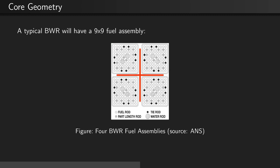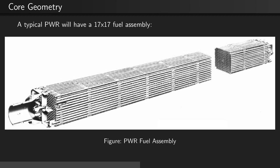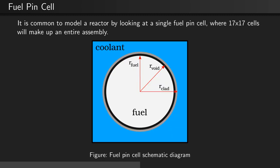In a normal boiling water reactor, we have a 9x9 fuel assembly. This image shows four 9x9 fuel assemblies with a crosshatch control rod between them. Typical pressurized water reactors will have a 17x17 fuel assembly. It is common to model reactors by looking at a single fuel pin cell that is one component of an entire assembly.